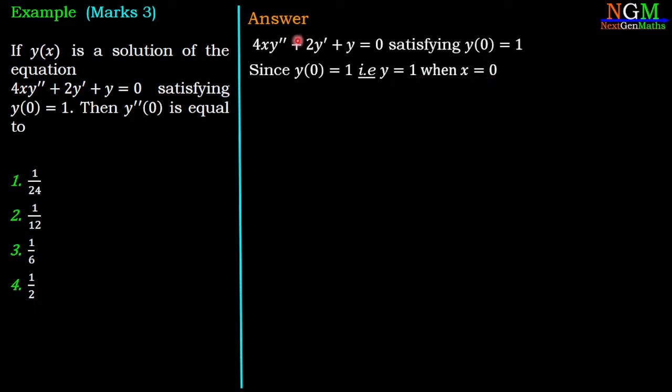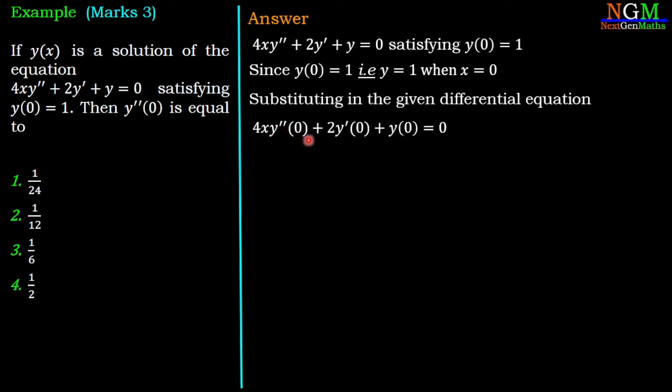Substitute that value in the given differential equation. Then we have 4x·y''(0) + 2y'(0) + y(0) = 0. When x = 0, then y = 1. So if you put x = 0, then the first term will be 0.